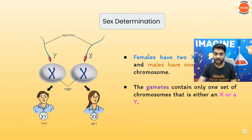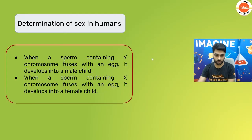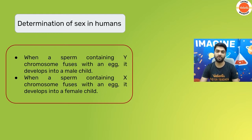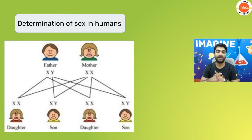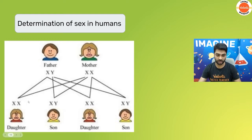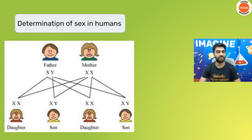You can see this on the table. The father is XY and the mother is XX. If X goes from the father, the mother can give only X, so it is going to be a daughter. If Y goes from the father, the mother can give only X, so it is going to be a son. So it is dependent on the father's sperm, not on the mother's womb, because the mother's womb can produce only X. A father's sperm can produce X or Y.